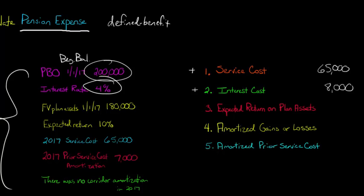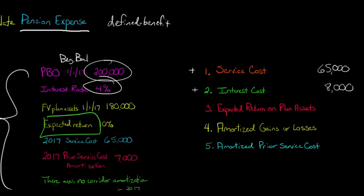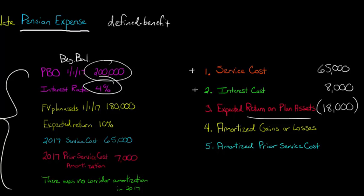Now we calculate the expected return — not the actual return — on our plan assets. The assets of the pension are invested in the stock market, bonds, etc. We take the beginning balance of the fair value of the plan assets, $180,000, and multiply it by 10%, which is the expected return rate management has estimated. That gives us $18,000, which we subtract because a return on plan assets reduces — offsets — our pension expense.